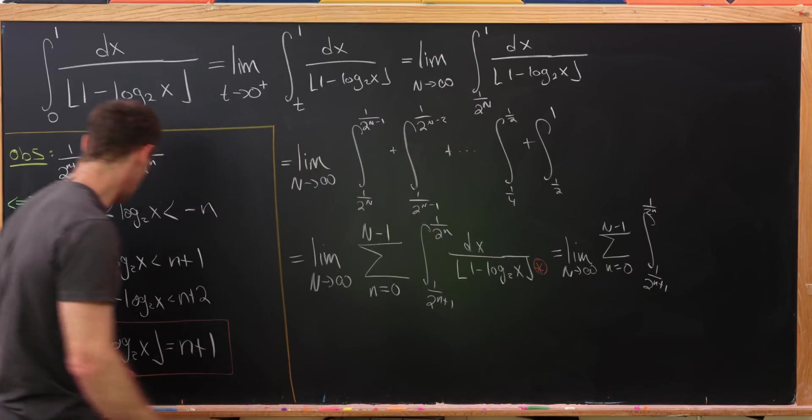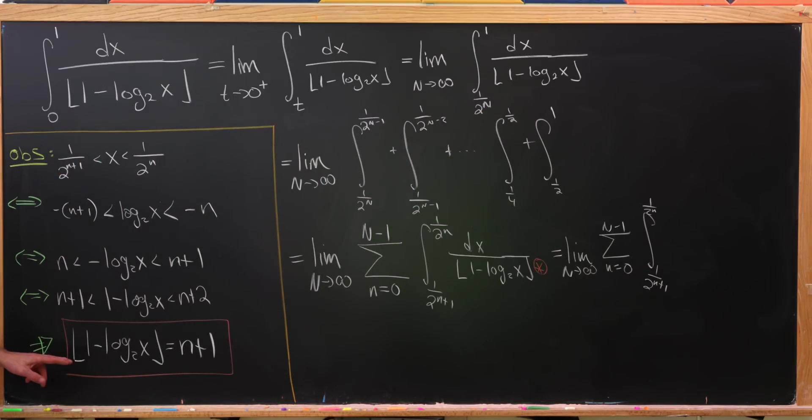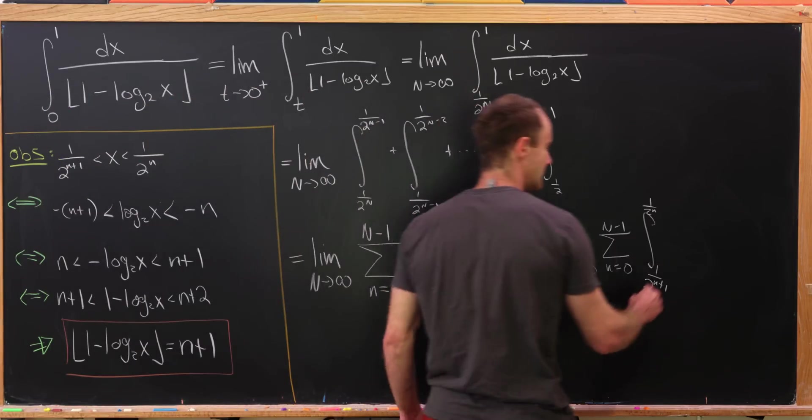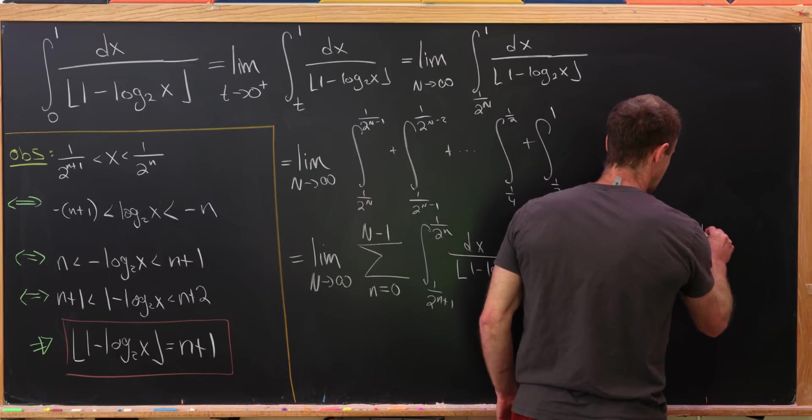But now we're integrating a constant because we can switch out this floor of 1 minus log base 2 of x with just 1 over n plus 1. So we have 1 over n plus 1 dx.